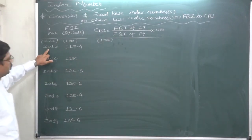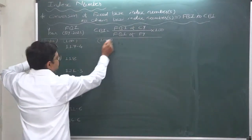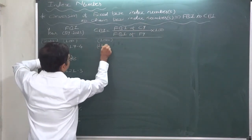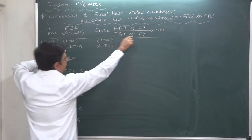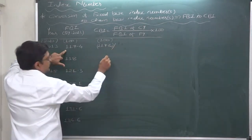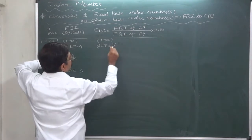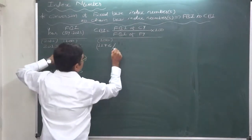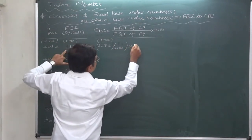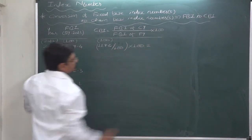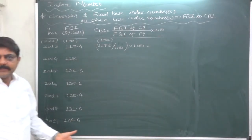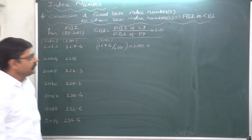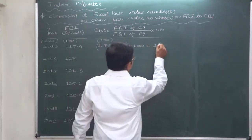For 2013: the fixed-base index number for the current year is 117.4, divided by the fixed-base index number of the previous year (base year 2012), which is 100. Multiply by 100. The chain-based index number for 2013 is 117.4.